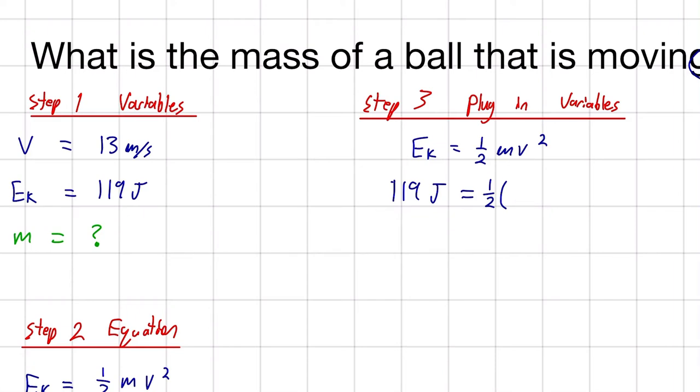Sorry, my apologies. M is our unknown, and v is our 13 meters per second. And that's squared.